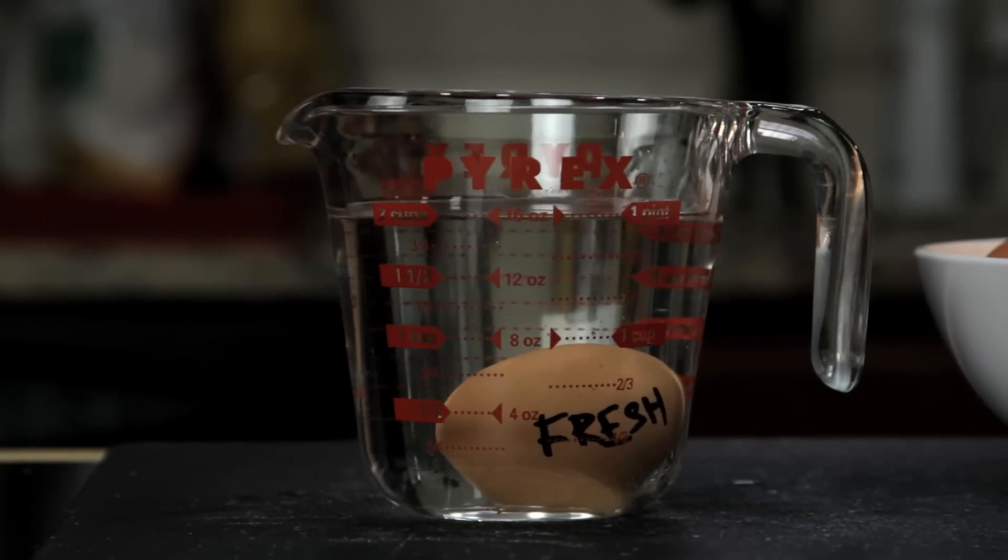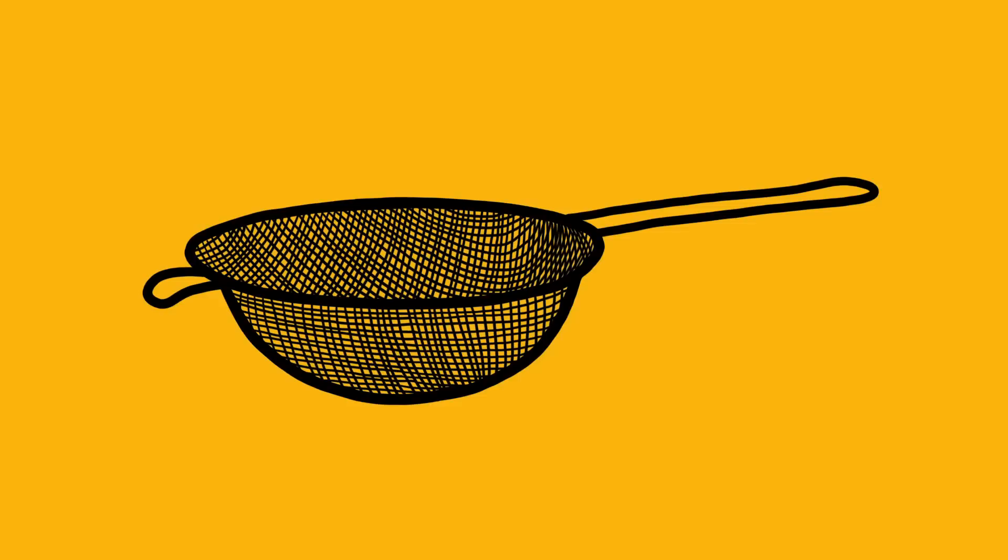Once you've got your fresh egg, the second tool you need is something that I saw first suggested by British chef Heston Blumenthal, a fine mesh strainer.